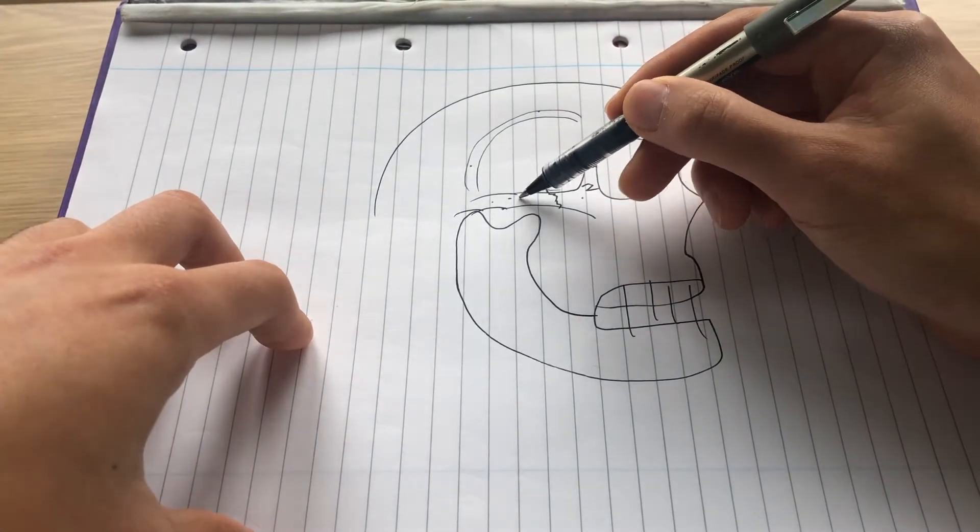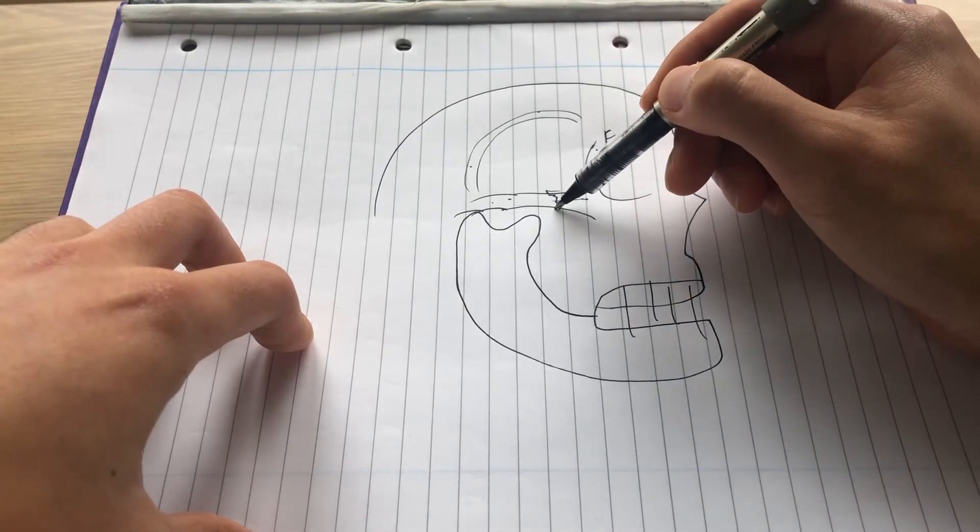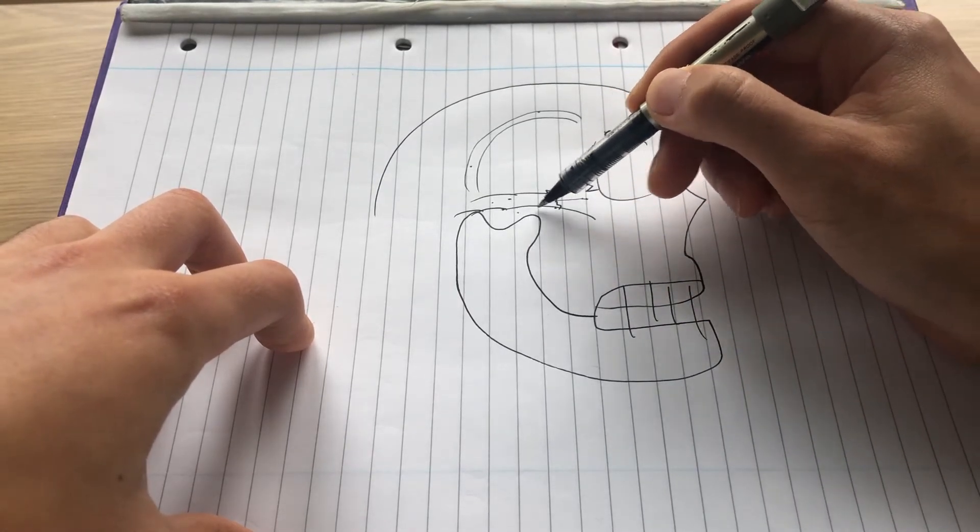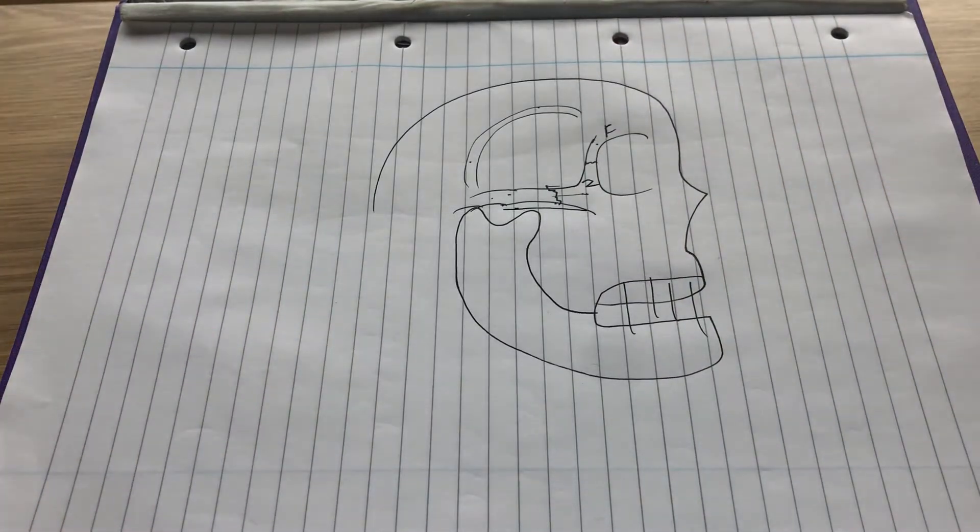Laterally, it is bordered by the zygomatic arch. Inferiorly, it is bordered by the infratemporal crest, which is a line on the greater wing of the sphenoid.